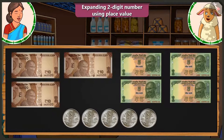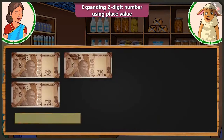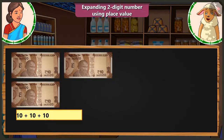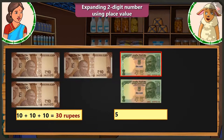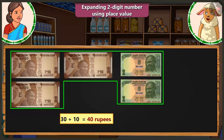Don't worry, Lily. There are 1, 2 and 3 notes of rupees 10. Adding them makes it 30 rupees. Now, adding this 5 and 5 makes 10. And adding 10 to this 30 makes 40.